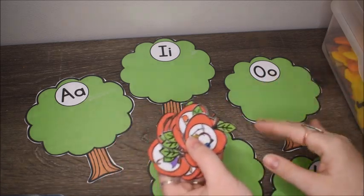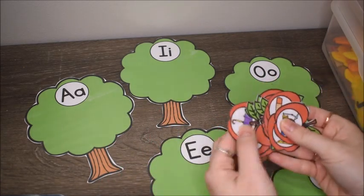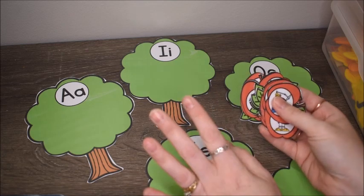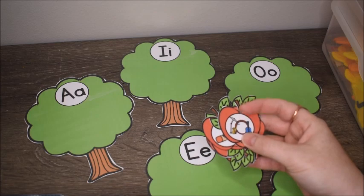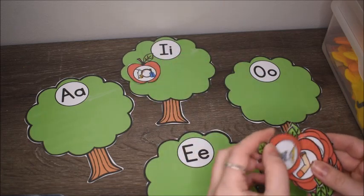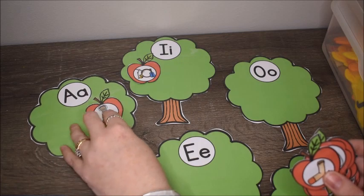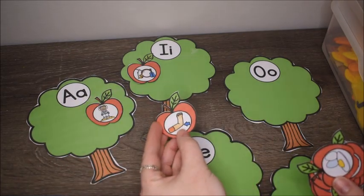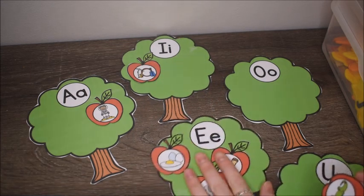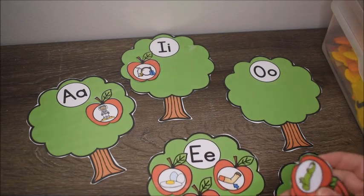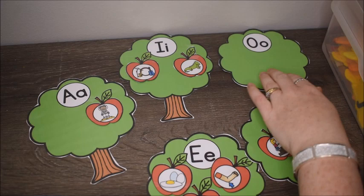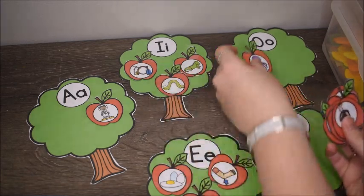There are three apples for each tree. This apple has an instrument, so it goes on the I tree. Here's an astronaut — it goes on the A tree. Here's an elbow — that goes on E. I have egg and elephant for the E tree. We have iguana, and 'up' goes on the U tree. They have to match up the apples to the correct tree.